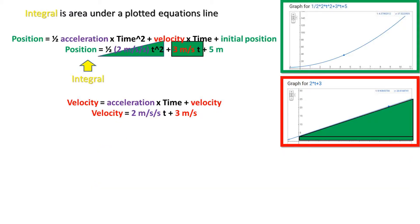To take this one step further, the area under the velocity equation is the position formula. Notice that the position formula is the formula for a triangle, which is one-half base times height — which is the acceleration portion — plus the formula for a rectangle, which is base times height — which is the velocity portion. Then we add our constant, which is plus 5 meters. If we didn't know what the constant was, we would just add a plus C.